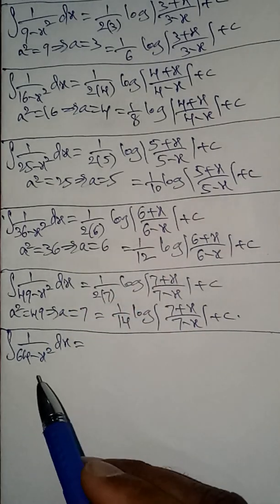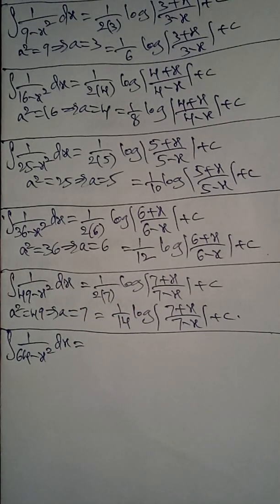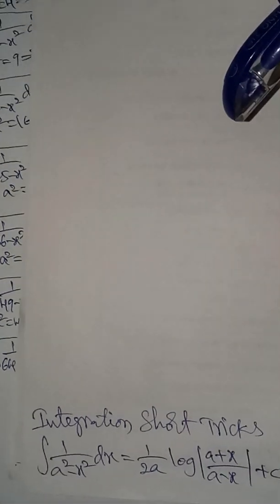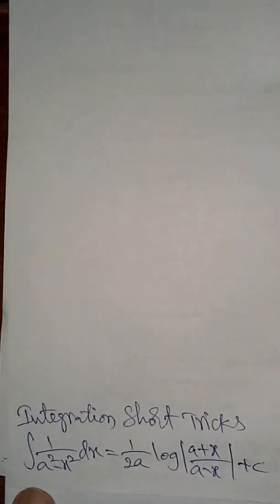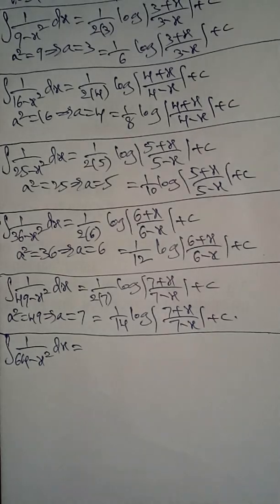Integration super speed short trick: integral 1/(64 - x²)dx. If you know this formula, you will get the answer within fraction of five seconds only. Integral 1/(a² - x²)dx is equal to 1/(2a) log |a + x / a - x| + c. So here a² is equal to 64, a is equal to 8.